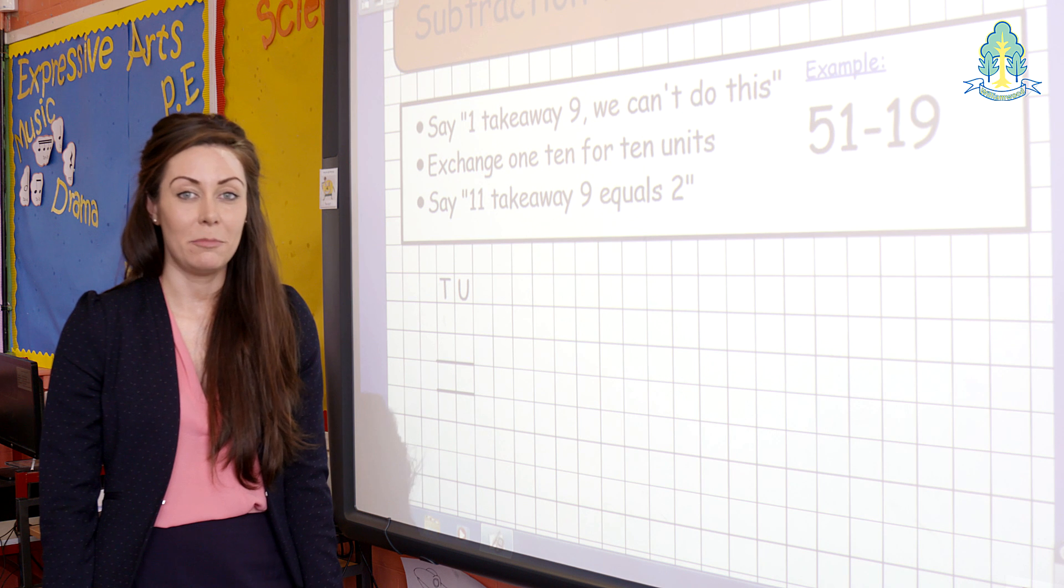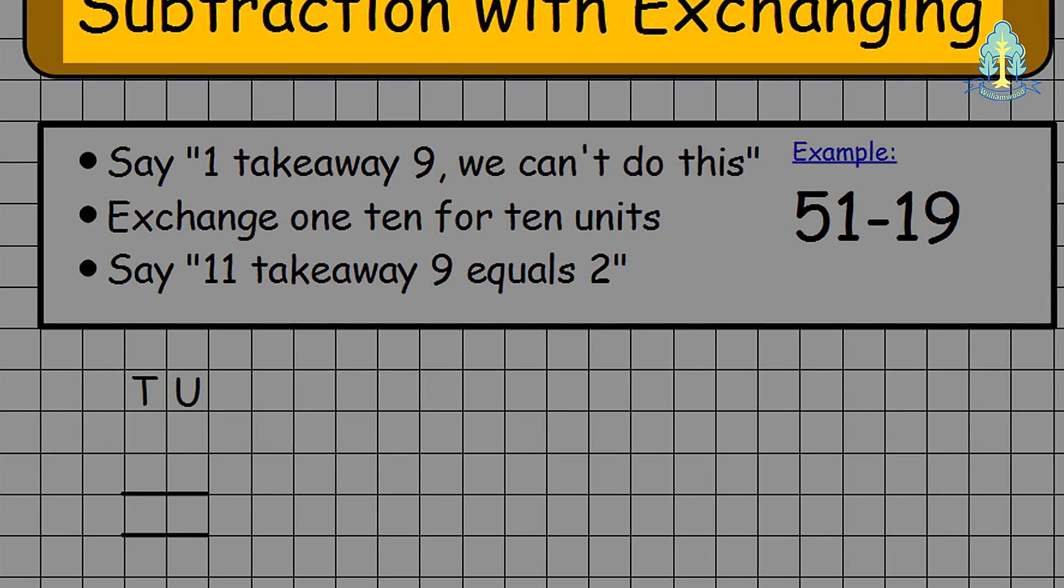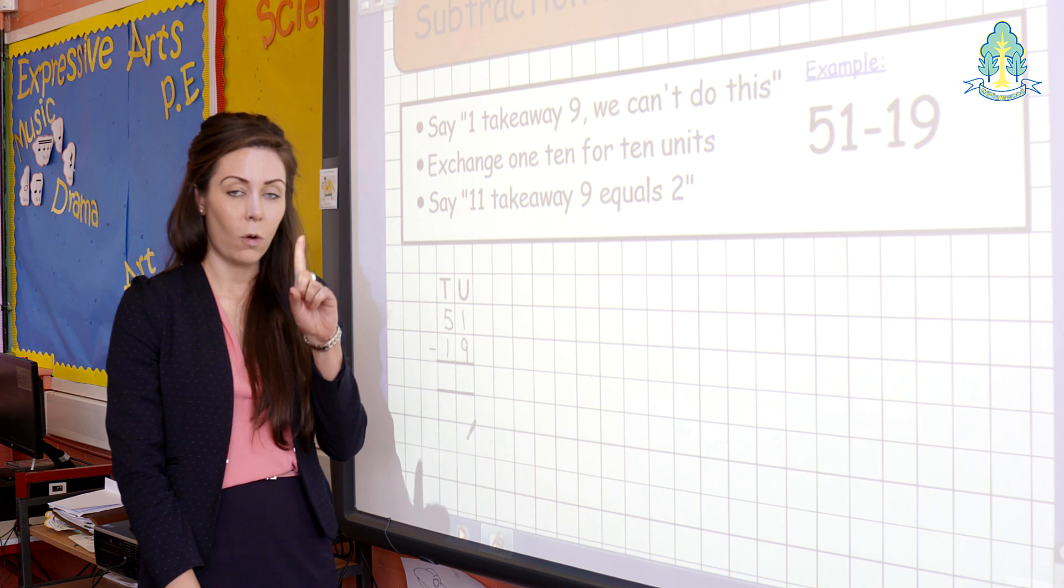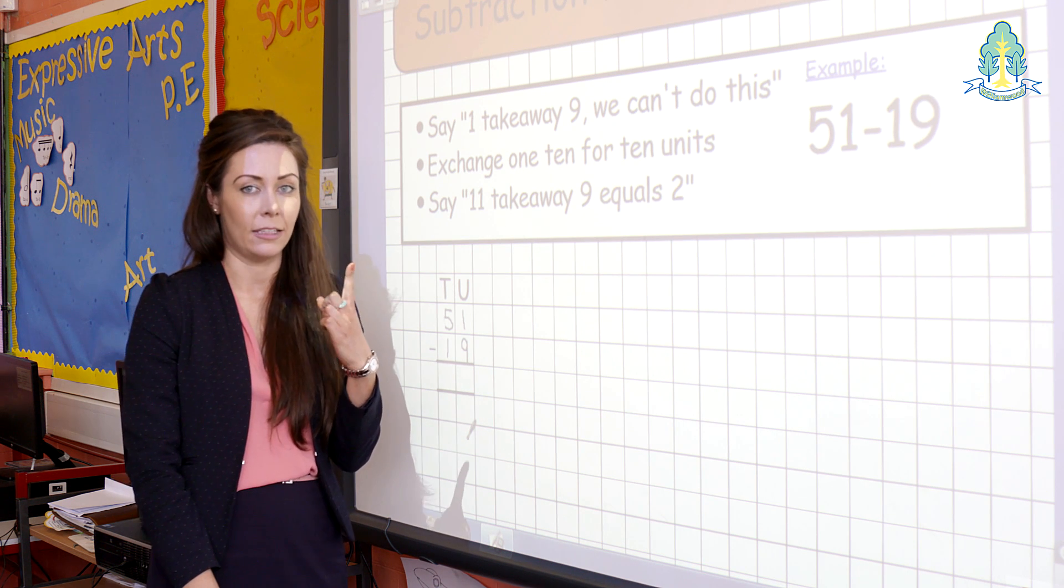Pupils at first level then progress to subtraction with exchanging. For example, 51 take away 19. Pupils start by subtracting in the units column, 1 take away 9. We can't do this. Pupils can check on their fingers by saying 1 and trying to subtract 9 which they won't be able to do.